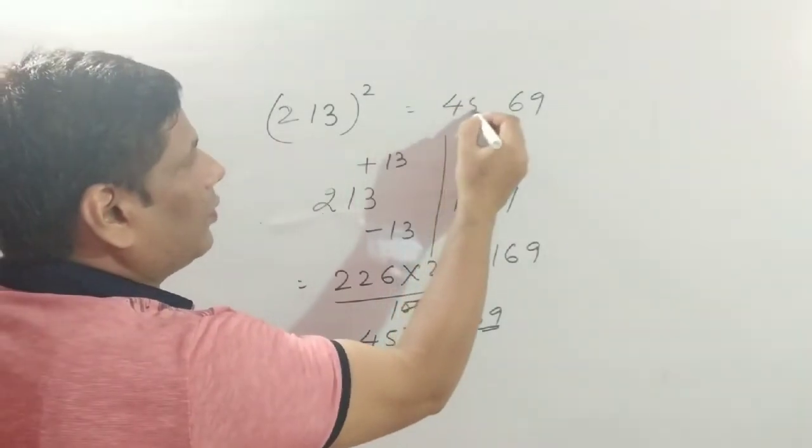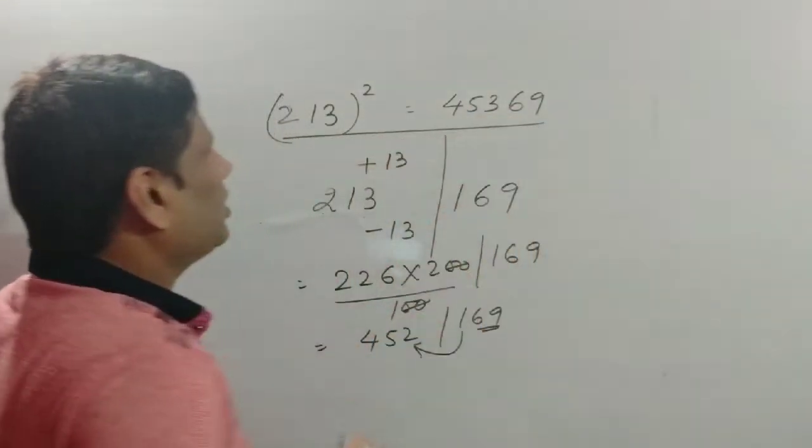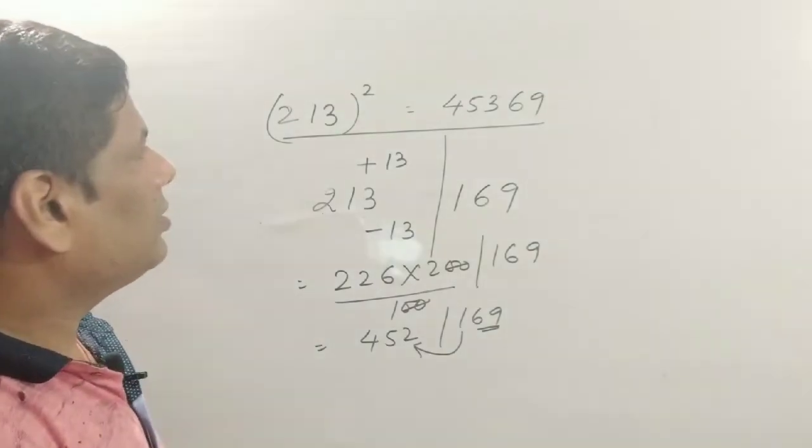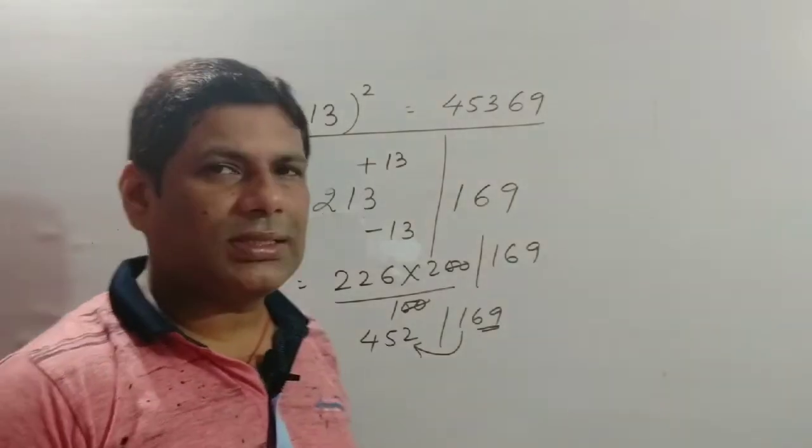Write 69, and add this 1 to get 453. So finally the square of 213 is 45,369.